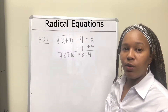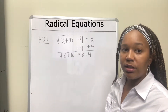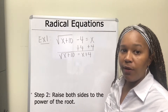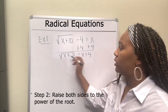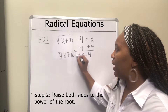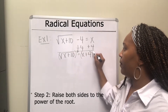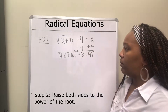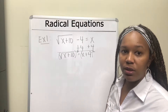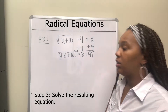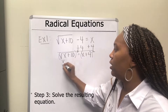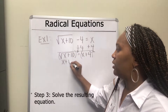Once you have isolated the root, the next thing you want to do is raise both sides to the power of the root. This is a square root, so I need to raise both sides to the second power. Then the next step is to solve the resulting equation. The square root and the square cancel, leaving x plus 10.